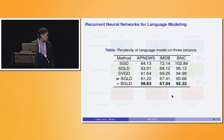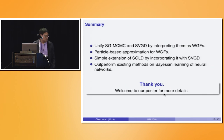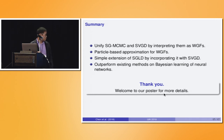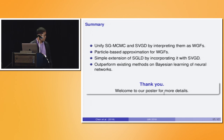In summary, we propose a unified framework for SGMCMC and SVGD by interpreting both as Wasserstein gradient flows. We propose particle-based approximations for Wasserstein gradient flows, and a simple extension of SGLD by combining it with SVGD, obtaining better performance on Bayesian learning of neural networks. For more details, you're welcome to visit our poster. Thank you.